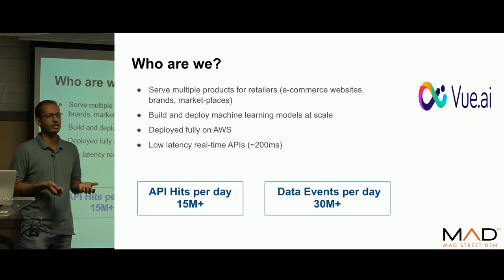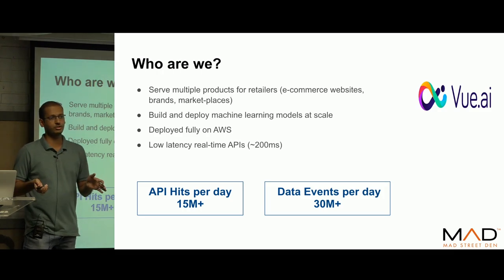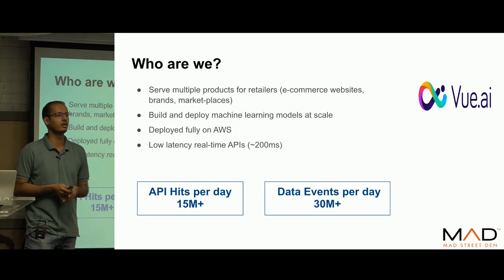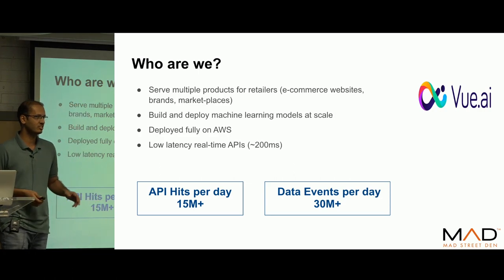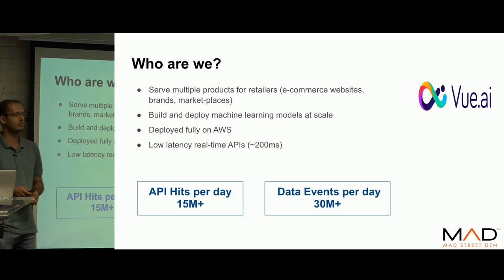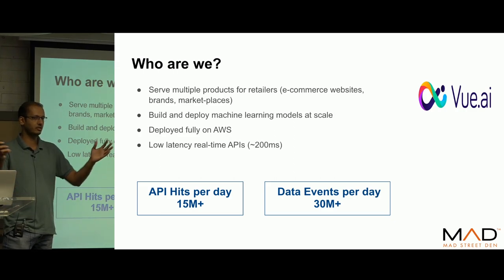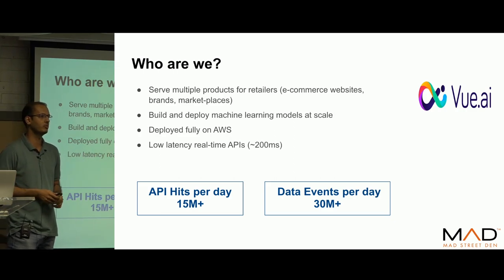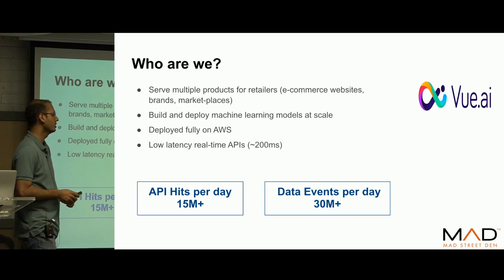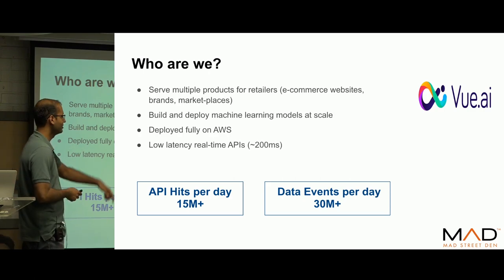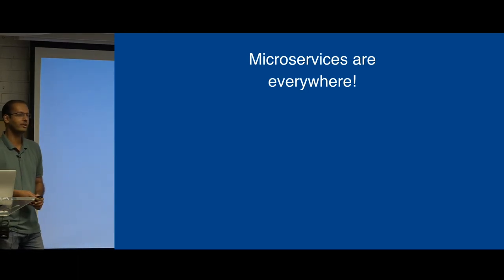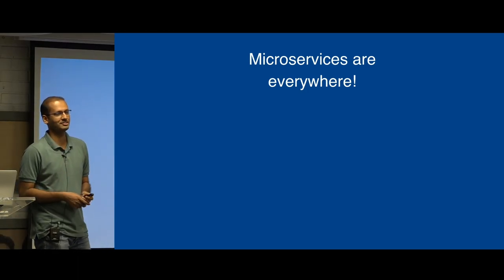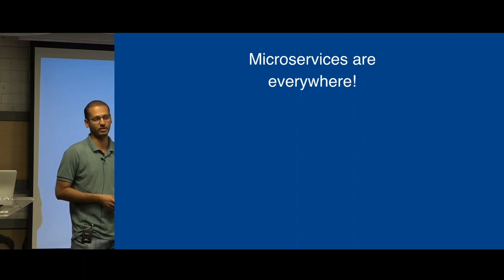E-commerce companies and other brands consume our platform for machine learning and personalization widgets. We deploy machine learning models at scale, hosted on AWS, and serve requests at sub-200ms latency. These are some of our API numbers — we serve pretty huge traffic because we are aggregating a lot of e-commerce traffic.